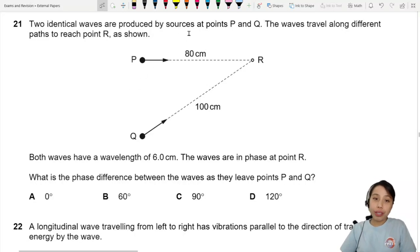Two identical waves are produced by sources at points P and Q. They both travel along different paths to reach point R.